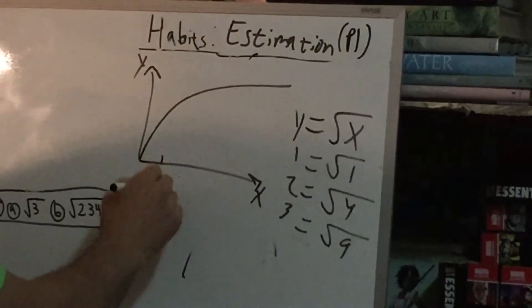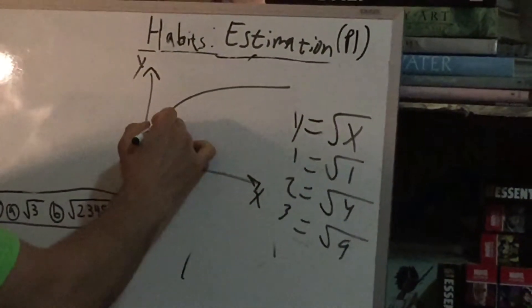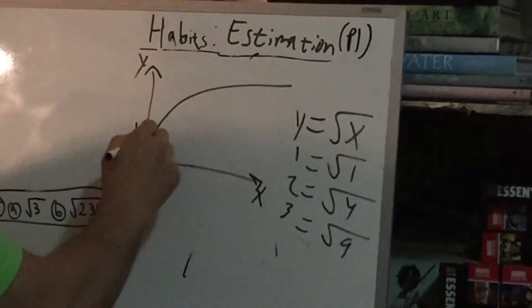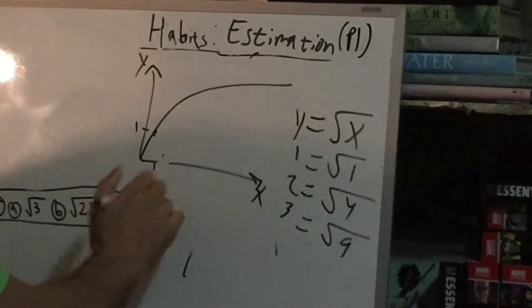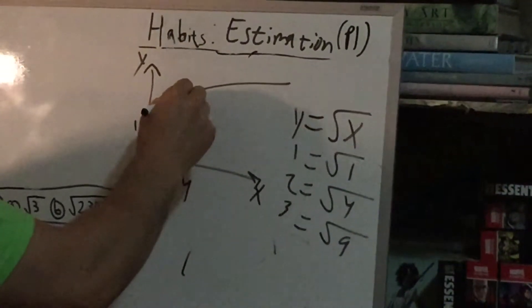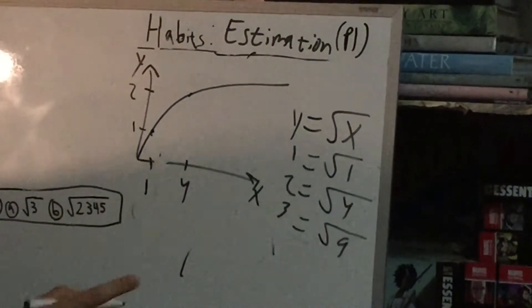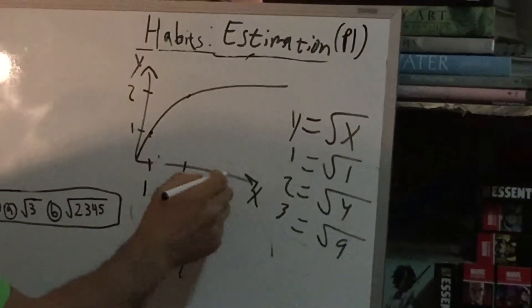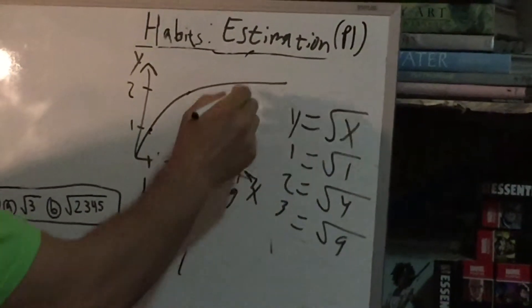If we go to 1, we get 1. This should be somewhere here. If we go to 4, we get 2. Now, notice we have to go pretty far out to 9 to get the next number.